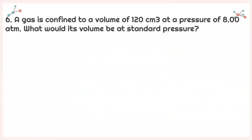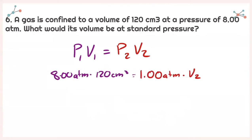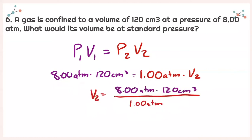For number 6, a gas is confined to a volume of 120 centimeters cubed at a pressure of 8.0 atmospheres. What would its volume be at standard pressure? Same equation. Standard pressure means 1 atmosphere, so knowing that, I can plug in my initial pressure and initial volume, and solve for V2 at 1 atmosphere. Plugging into my calculator, with sig figs, I get 960 centimeters cubed.